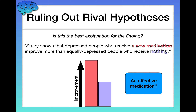Why would I argue that? Because in a variety of psychological studies, we know that the expectation of improvement can actually lead to improvement. So even if the medication is totally bogus and ineffective — even if it does nothing — people tend to improve because they have hope and believe it will help them. This is called the placebo effect, and it's a rival hypothesis here — an alternative explanation for the results. The difference between the two groups could be due to the placebo effect rather than the effectiveness of the medication.